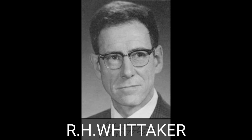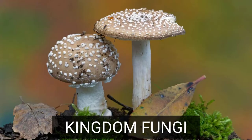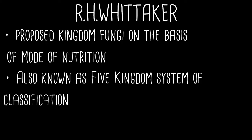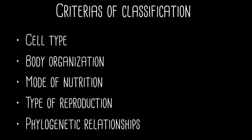Before Whittaker's system of classification, bacteria and fungi were placed in Kingdom Plantae. As more characteristics of fungi and other microorganisms became known, a more advanced classification became necessary. Kingdom Fungi was proposed by R.H. Whittaker in 1969 on the basis of mode of nutrition. He proposed the five kingdom system of classification by considering criteria like cell type, body organization, mode of nutrition, type of reproduction, and phylogenetic relationships.